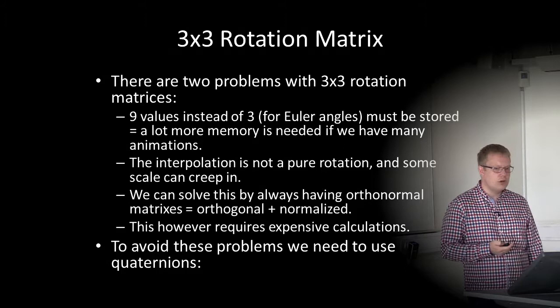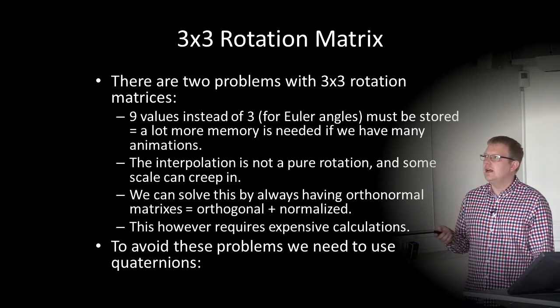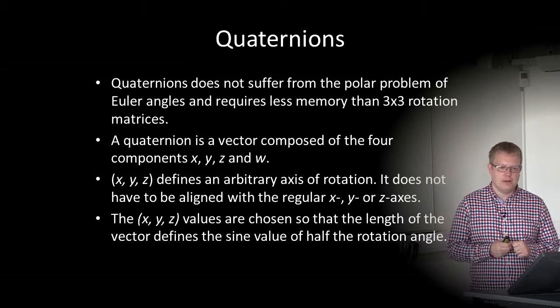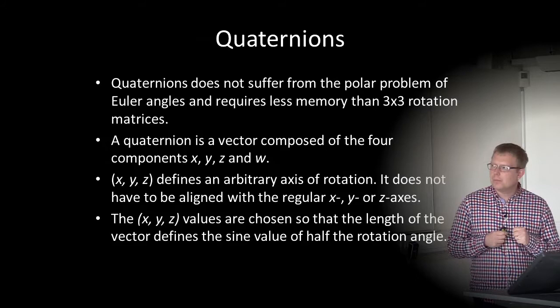To avoid these problems, we need to use quaternions, which are standard in most game systems today. Quaternions do not suffer from the polar problem of Euler angles, require less memory than 3×3 rotation matrices, and have no scale creep.